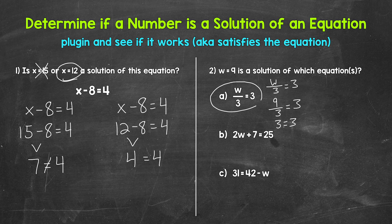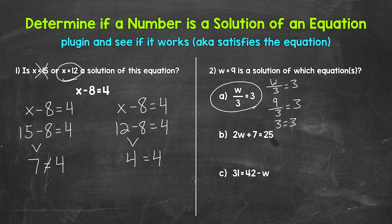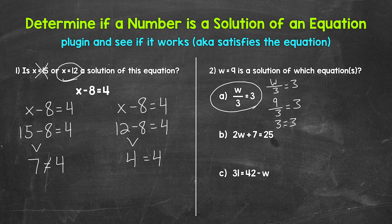Let's move on to choice B and see if nine is a solution of this equation as well. We have two w plus seven equals 25. So two times w plus seven equals 25. Remember, when we have a number next to a variable, that means multiplication.